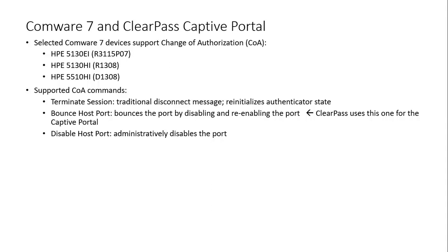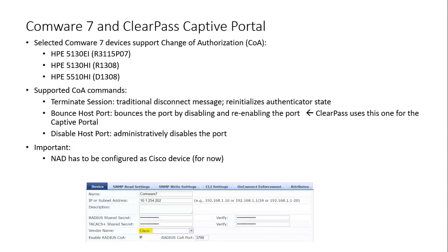There is one important COA message, which is the Bounce Host Port — that's an important one for the captive portal. ClearPass can send this message to a switch, telling it to shut down and enable a port, causing a new authentication to take place. Another important configuration item is that on ClearPass, the Comware 7 switch, also known as the NAS device in ClearPass, has to be configured as a Cisco device, because Comware 7 is capable of understanding the Cisco Bounce Host Port COA message.